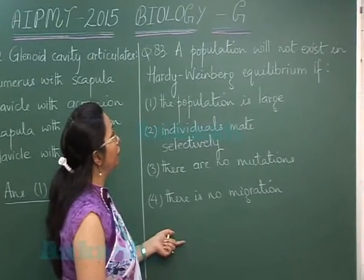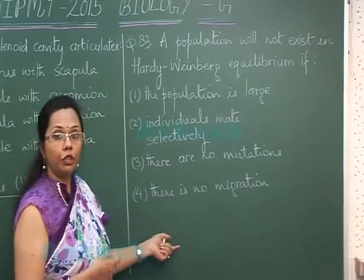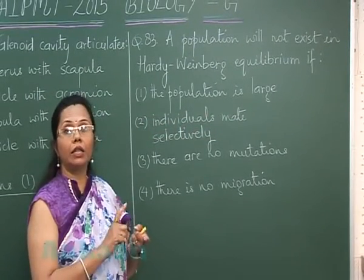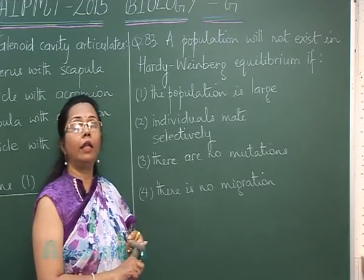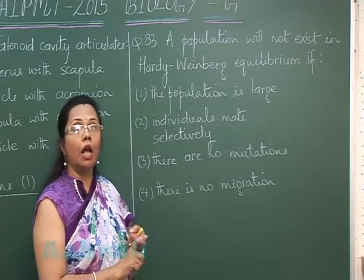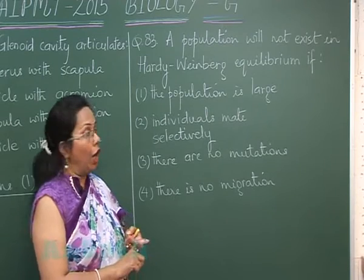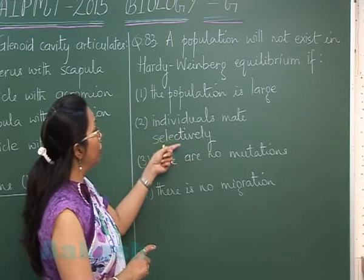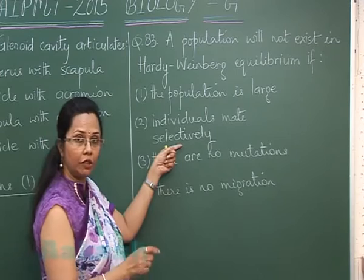Question 83: A population will not exist in Hardy-Weinberg equilibrium if... A population exists in Hardy-Weinberg equilibrium provided that it is a large, randomly mating population with no migration, no mutation, and no selection — only then can it exist in equilibrium. Here, the population is large but individuals mate selectively.